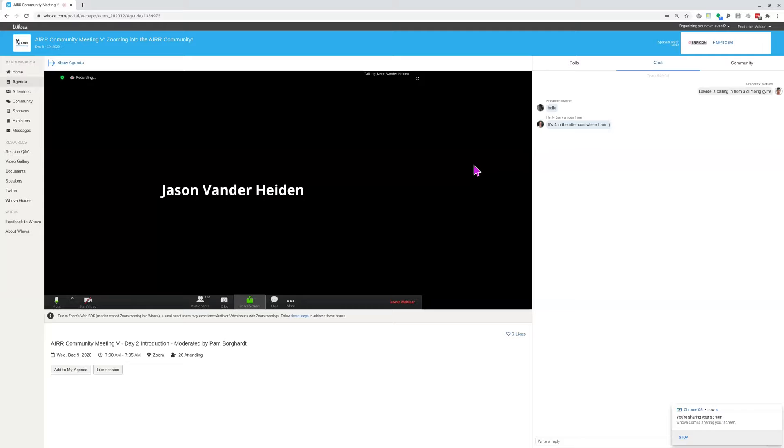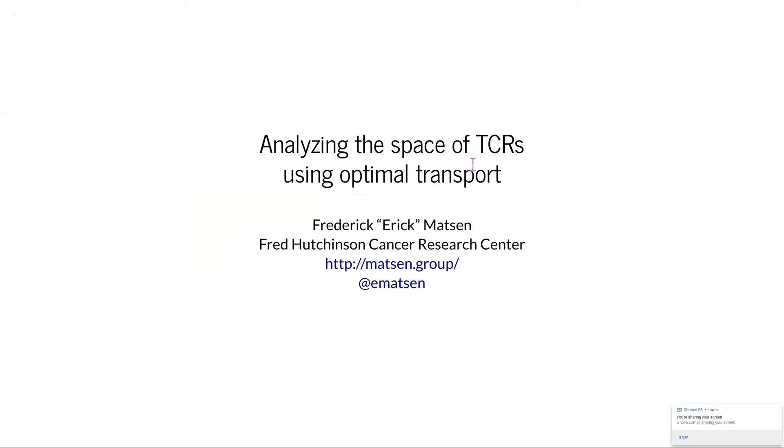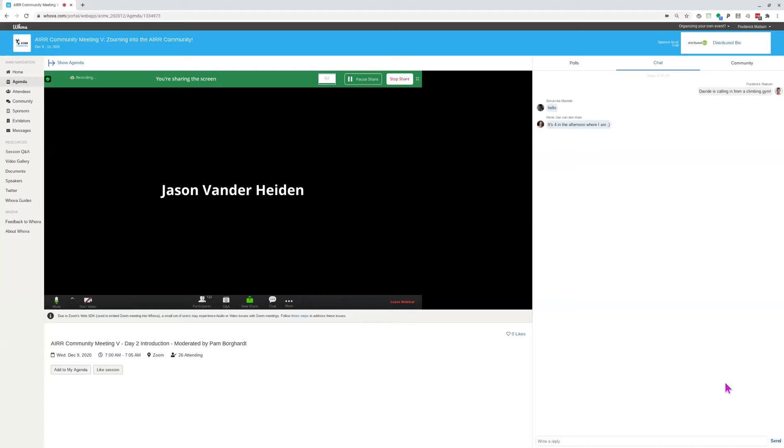Jason introduces Eric Mattson, a professor at the Fred Hutchinson Cancer Research Institution and computational biologist. His team develops methods to analyze data from immune cell DNA, viruses, and environmental microorganisms. He's an expert in phylogenetics, and Nathan will talk about analyzing the space of TCR cards using optimal transport.